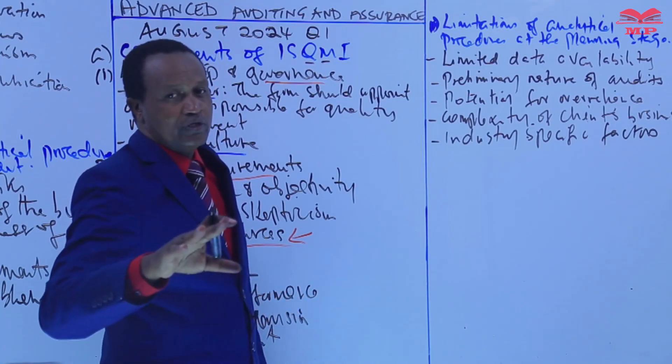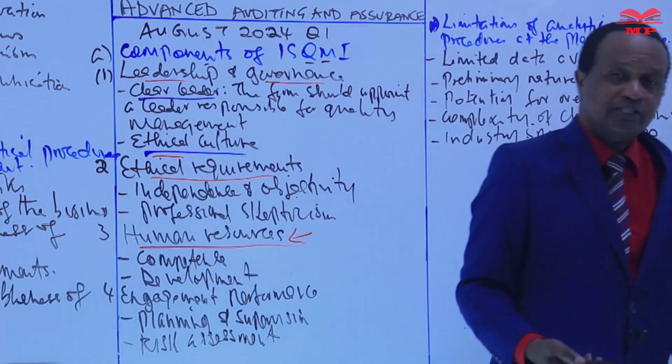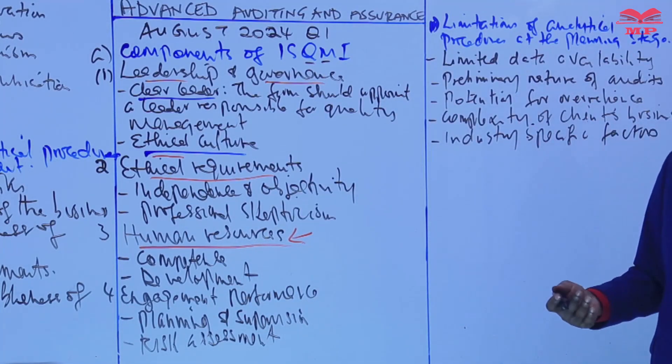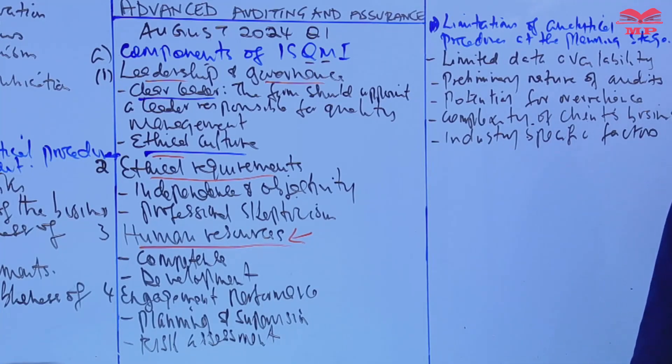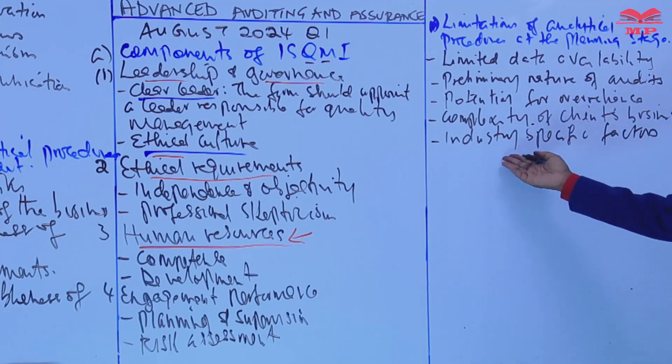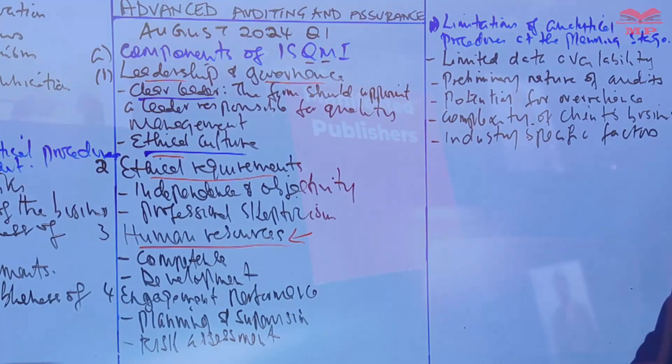So for example, analytical procedures may be less effective for clients in highly volatile industries or those with unique business models. So analytical procedures may not be effective in certain industries, and that is a limitation.